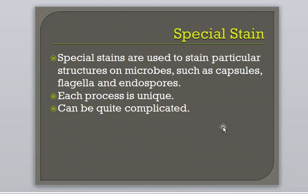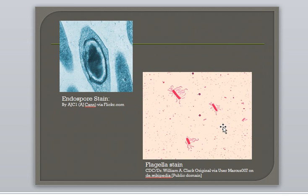Special stains are used to distinguish particular structures on cells, such as the presence of a capsule or flagella. Special stains require several steps and can get quite complicated. However, they are great for helping with identification of a microbe. Here are two examples of special staining techniques: the first is an endospore stain and the second is a stain for flagella.